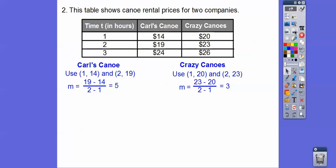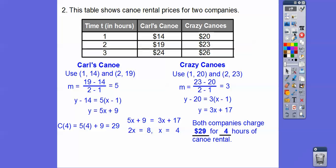So there's the slope. So of the 1, 14 and the 2, 19, we get a slope of 5. And of the 1, 20 and 2, 23, we get a slope of 3. Y minus Y1 equals M times X minus X1. So there's our two equations right there. And then we set them equal to each other. And we get X equals 4. And then we plug in X equals 4. And we get $29. So both companies will charge $29 for four hours of canoe rental.